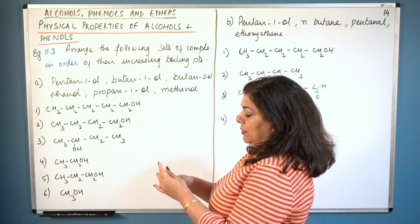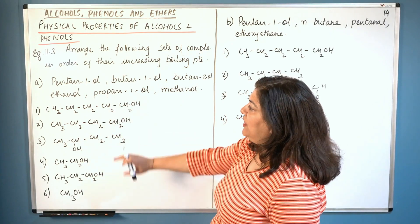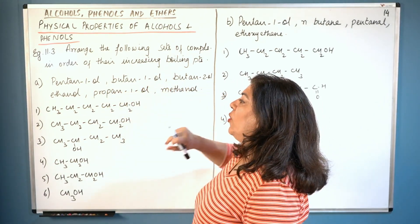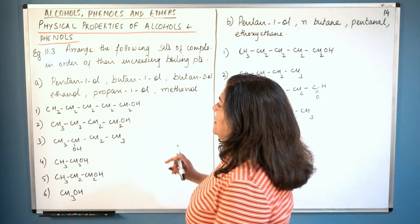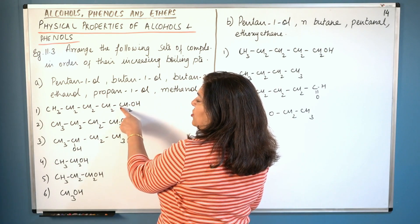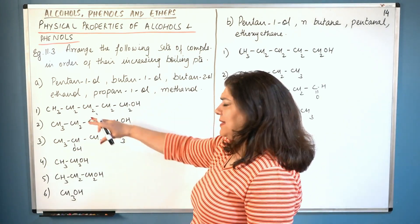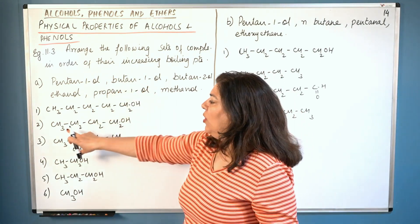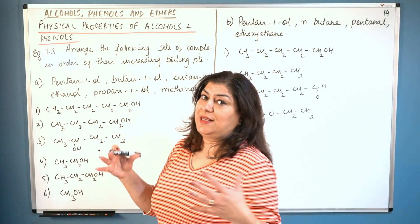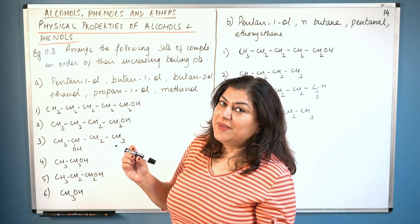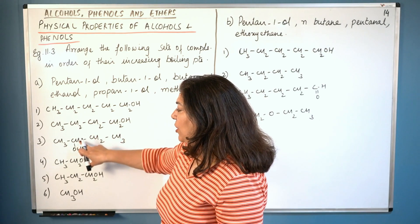Let us now solve part A of this question, which gives six compounds: pentan-1-ol, butan-1-ol, butan-2-ol, ethanol, propan-1-ol, and methanol. I've written the structural formula of all of these. Pentan-1-ol is a straight chain with five carbons and the OH on the first carbon. Butan-1-ol has four carbons — it is smaller in size than pentan-1-ol which has five carbons.